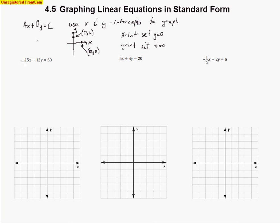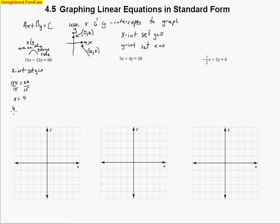Let's start with the first example. I'm using this intercept method because x and y are on the same side of the equal sign. To find the x intercept, I set y equal to 0. That term cancels out — 0 times 12 makes 0 — so I'm left with 15x equals 60. Dividing by 15 gives x equals 4. So this point is (4, 0), where the line crosses the x axis.